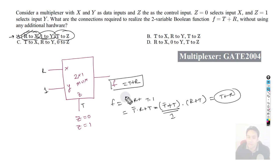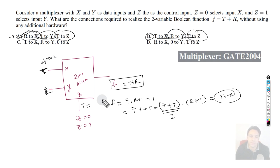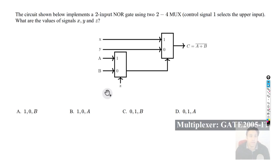If option A were wrong we'd check option B: X=T, Y=R, Z=T again, inserting those values and comparing the output. But since the first option itself gives T + R correctly, the correct answer is option A.